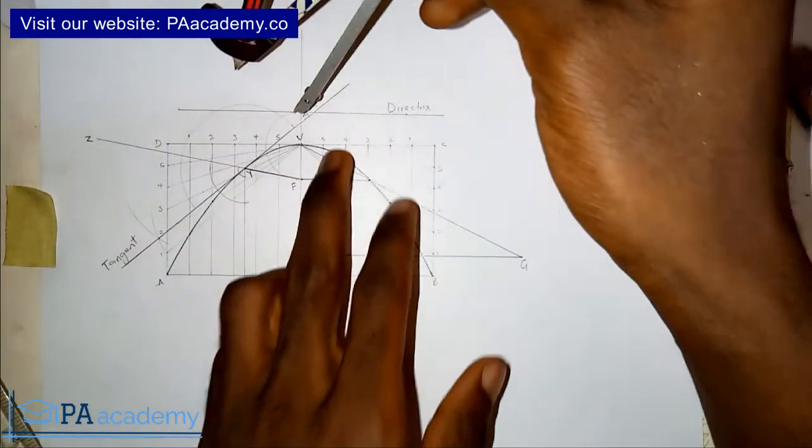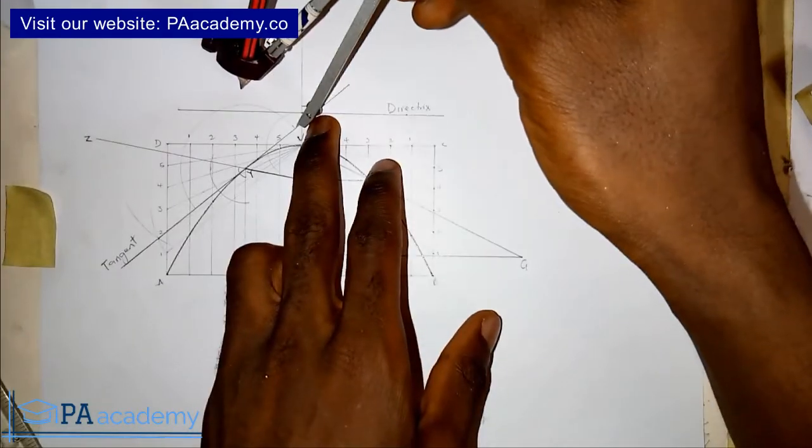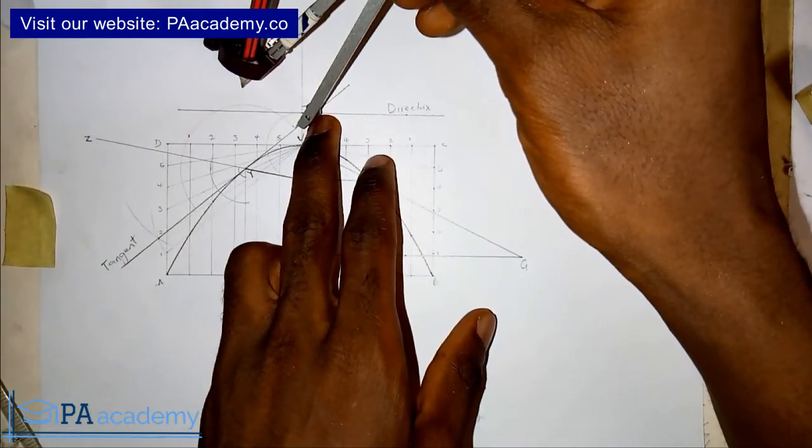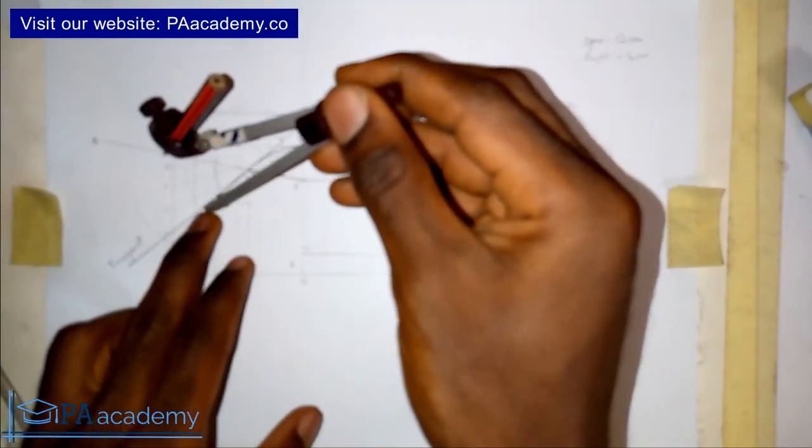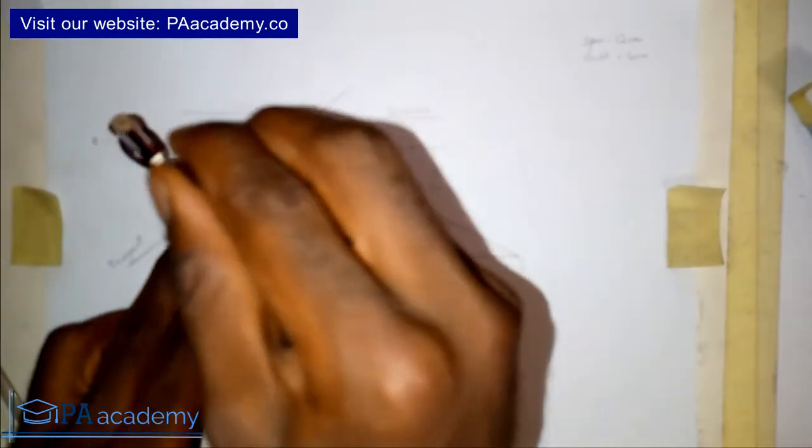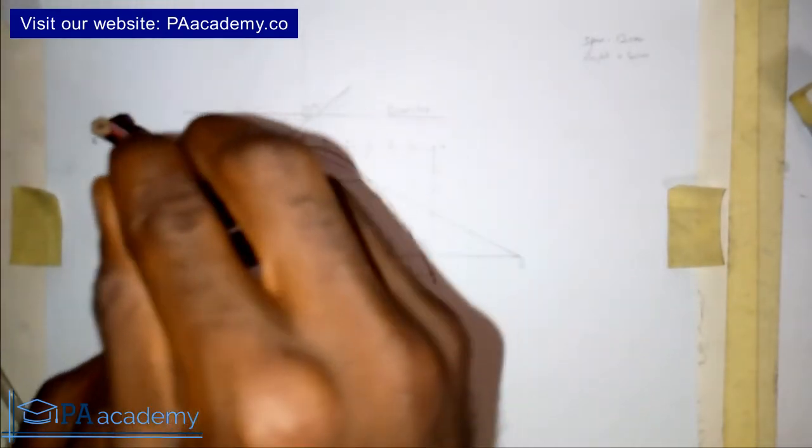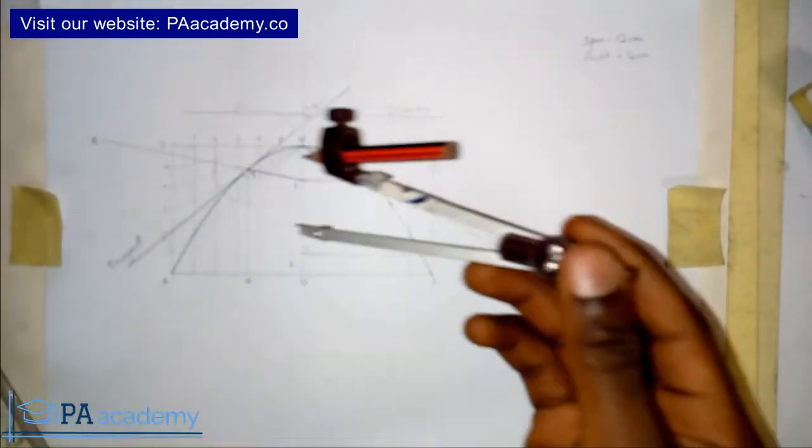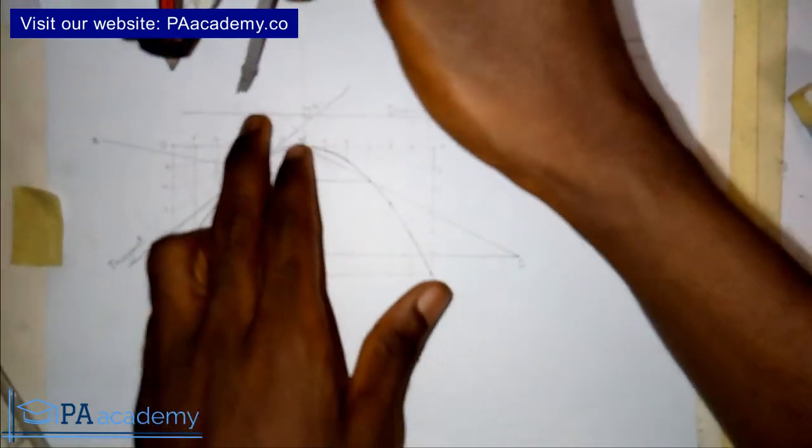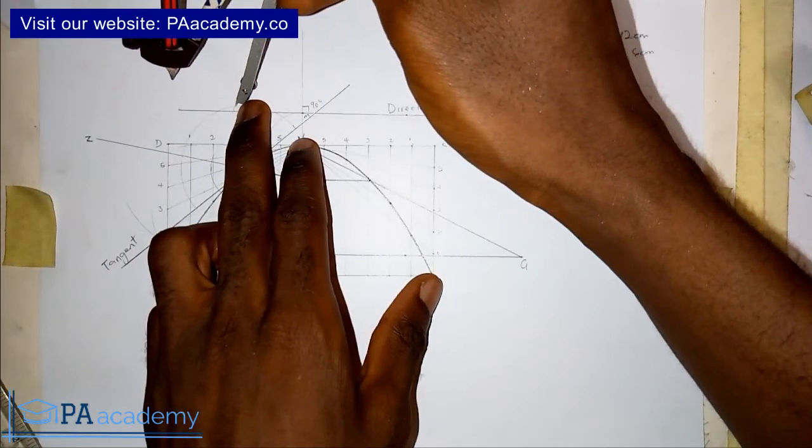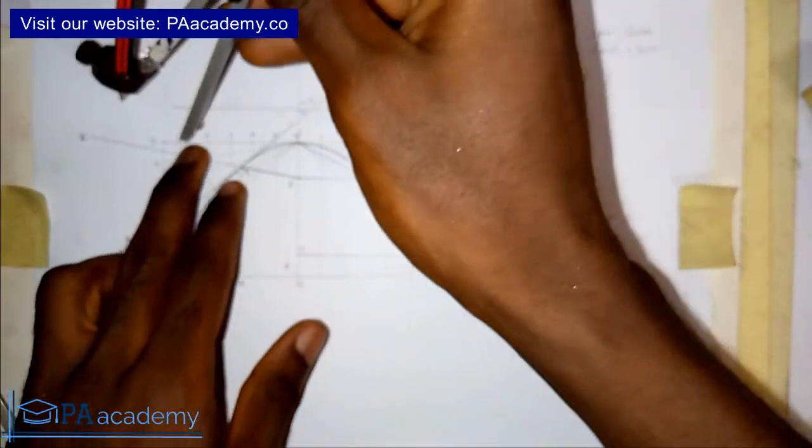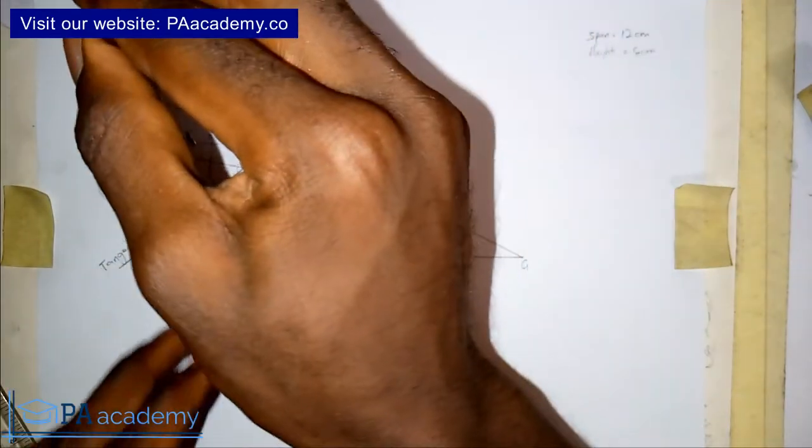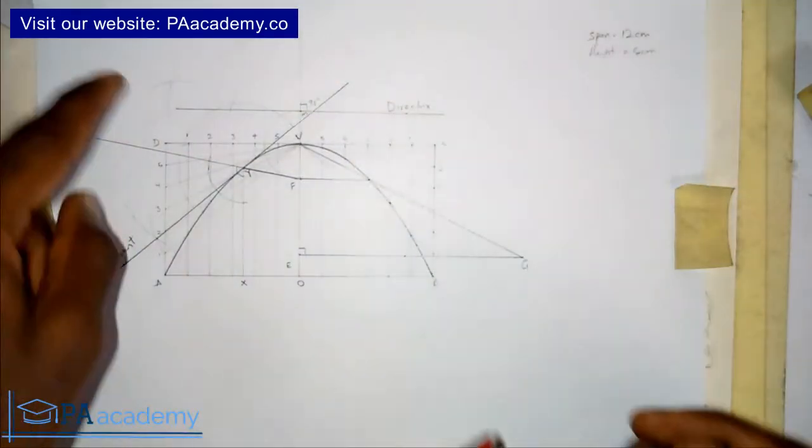So with the same length, where it is touching the tangent, I'll draw an arc to touch the semicircle. And then on the other side, I'll also draw an arc to touch the circle. So with the same length, I'll go to where the arc is touching the semicircle. I'll draw an arc. And I'll also draw an arc. So there are points of intersection.